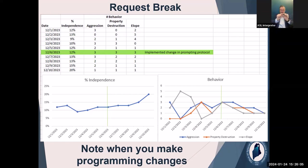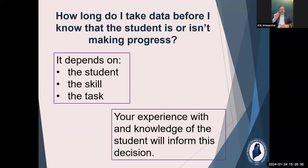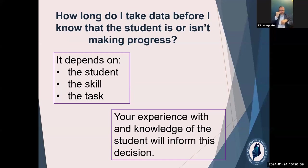Of course, in this example the first change worked — you can see the data was all over the place, and then after implementing the change, independence went up and behaviors went down. Obviously you might have to change more often than that. We also get the question: how long do I take data before I know whether the student is making progress? That really can't be answered definitively — it depends on the student, your knowledge of them, how long it typically takes them to pick up a new skill, and the nature of the skill. As you get to know the student better, you'll get a better handle on this.